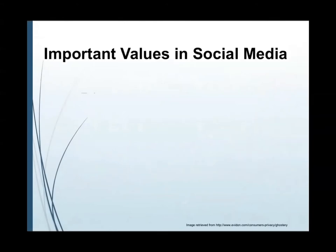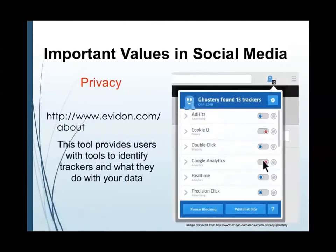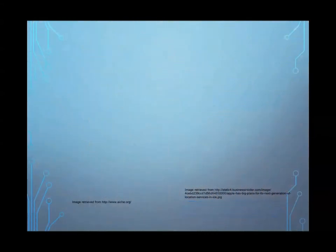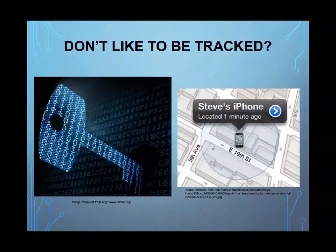Now we'll be talking about human values in social media. One of these human values is privacy, which is the right of an individual to determine what information about himself or herself can be communicated online. One form of tracking is digital tracking, which is through cookies and histories — everything you do on the internet can be tracked and even sold to third parties. Physical tracking can be done using GPS, such as location services on the iPhone.